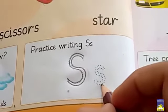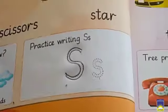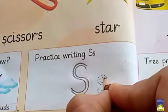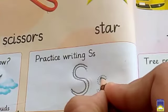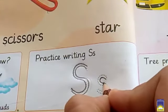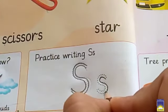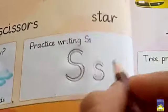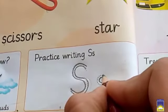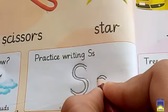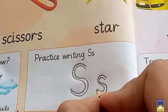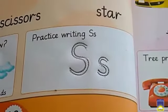Now we will write small s - its sound is /s/. Let's see how to write it. Start at the top again, go down, small round, to the bottom. Start at the top, go down, small round, to the bottom.